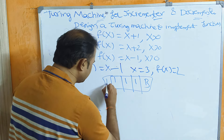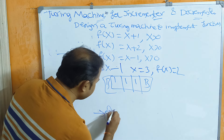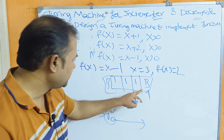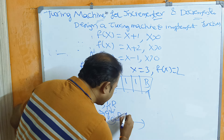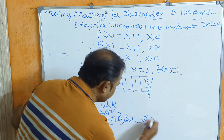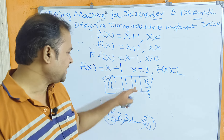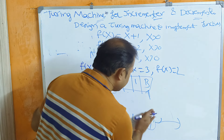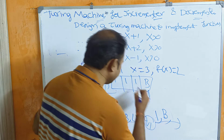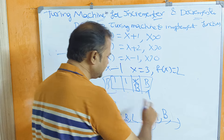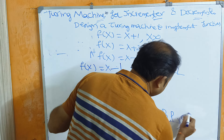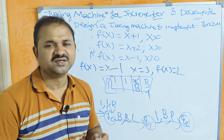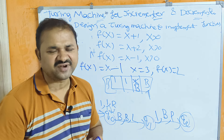If you want to make a transition on blank symbol in Q0, you can move to the right side of Q0. If you encounter a blank symbol again, move to the left side of Q0. Q2 is our final state, and the output is nothing but 2. Please like the video, subscribe to the channel, and share with your friends. Thanks for watching.